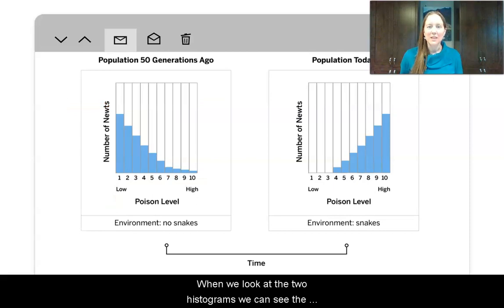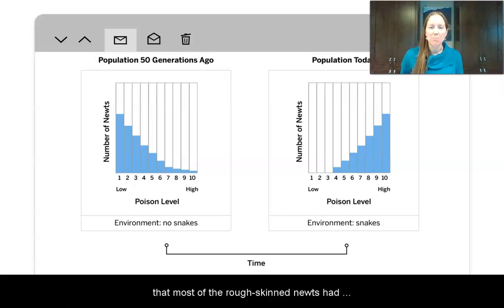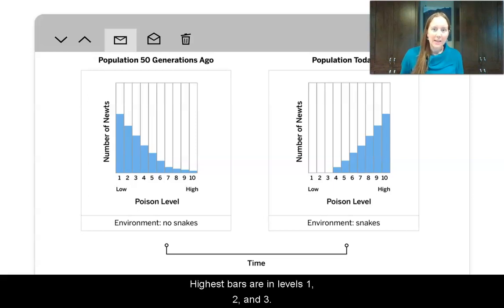When we look at the two histograms, we can see the rough-skinned newt population has changed a lot over 50 generations. I look at the distribution 50 generations ago and I see that most of the rough-skinned newts had very low levels of poison. The highest bars are in levels 1, 2, and 3.